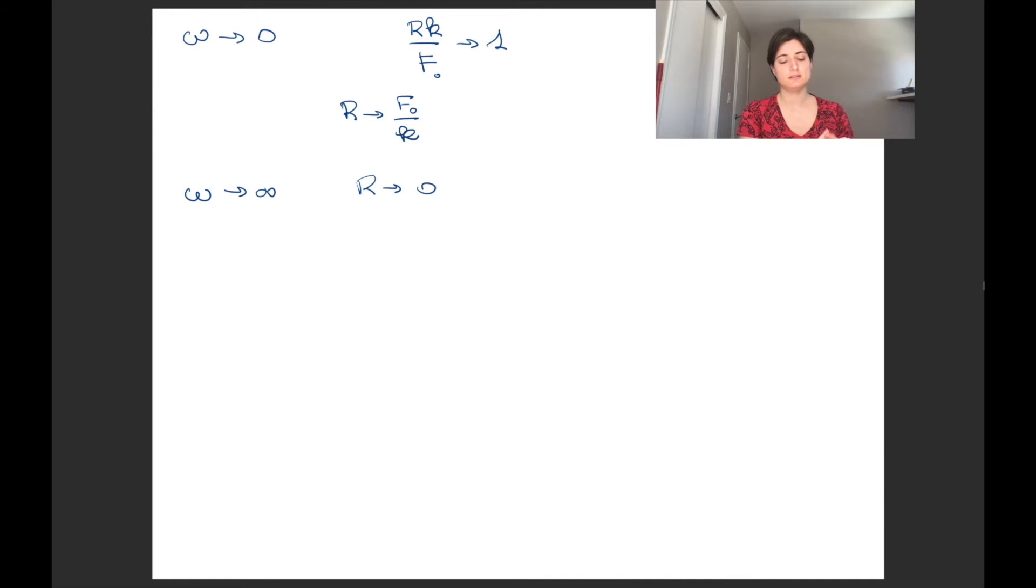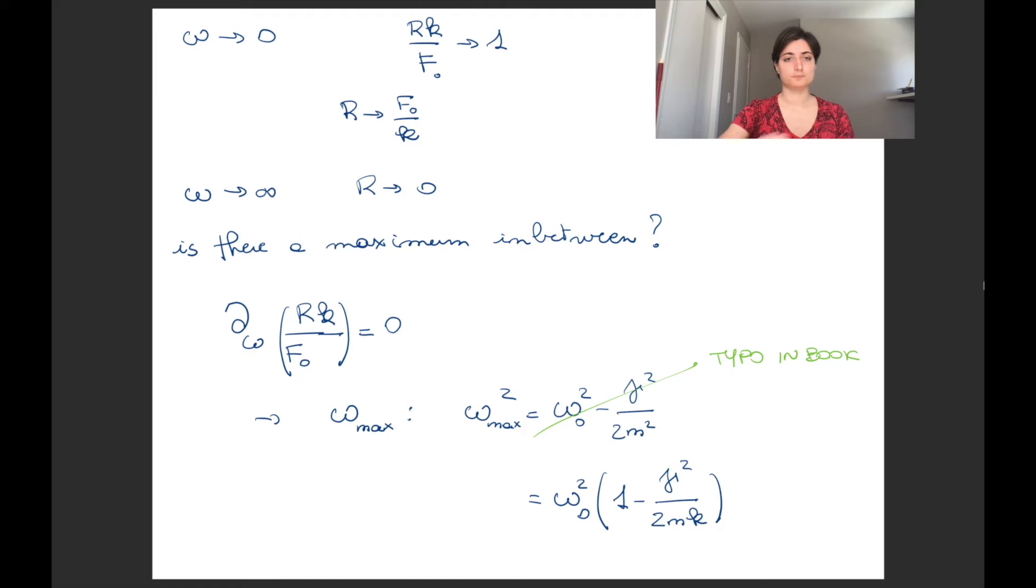For omega, the frequency of the forcing tending to zero, we have that the ratio between the amplitude of the forced response times k divided the amplitude of the forcing tends to one. For the forcing, the frequency of the forcing omega tending to infinity, R tends to zero.